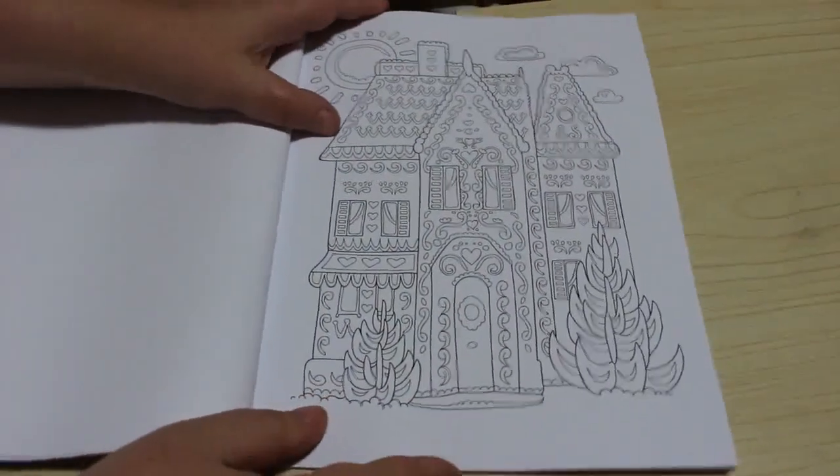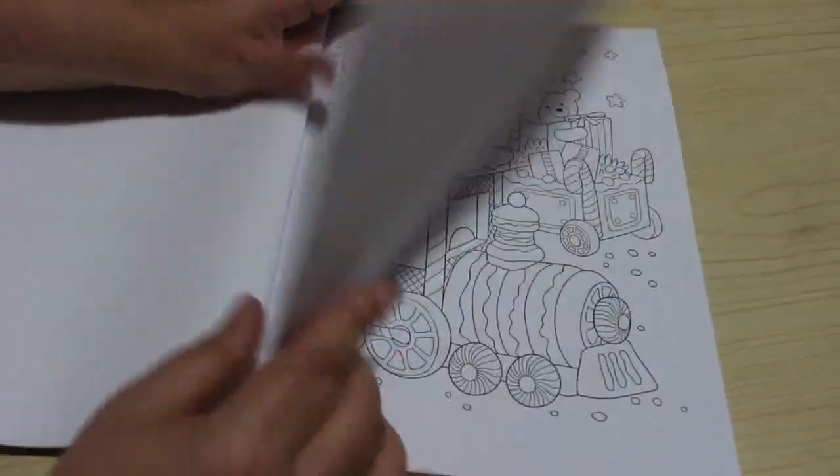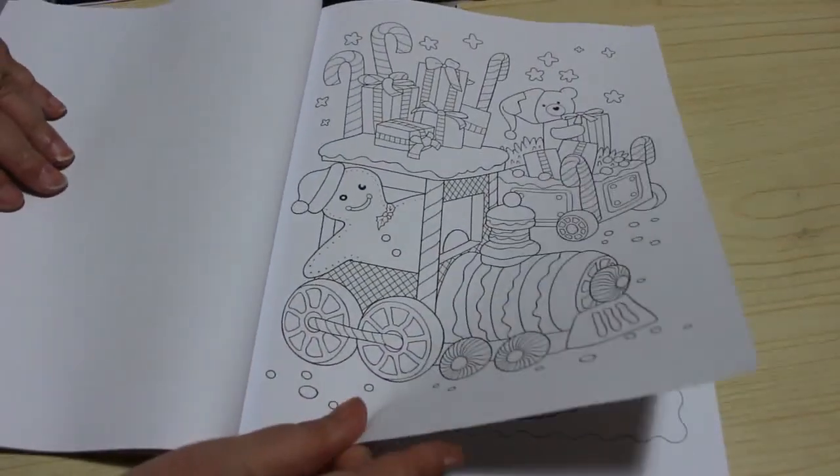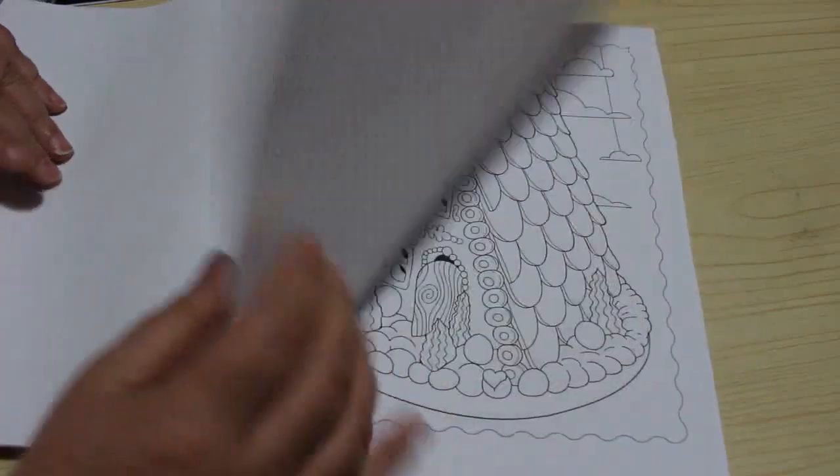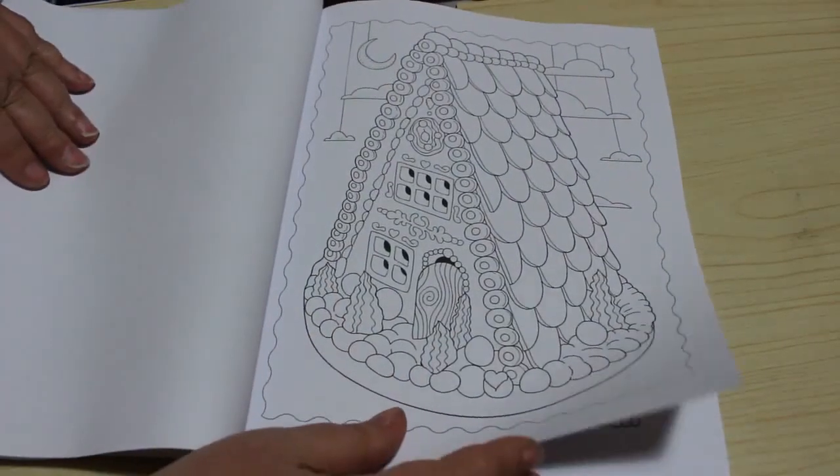That's a very pretty house isn't it? Look at that. Oh I like this one with the little cakey train and candy canes. That's a nice house.